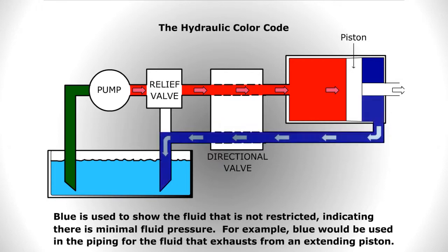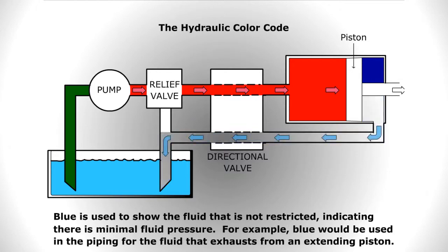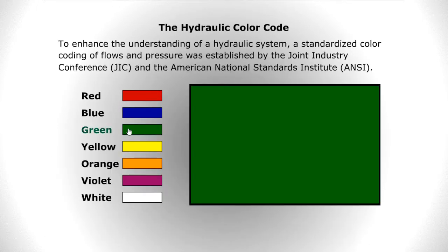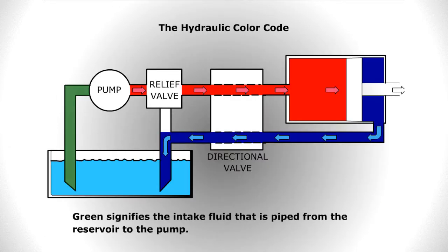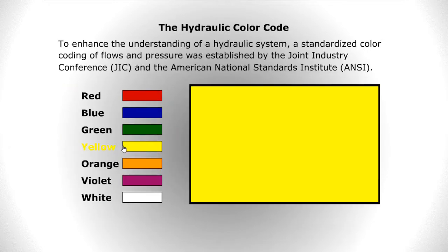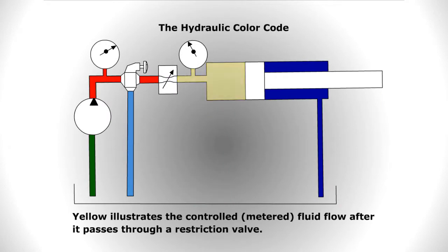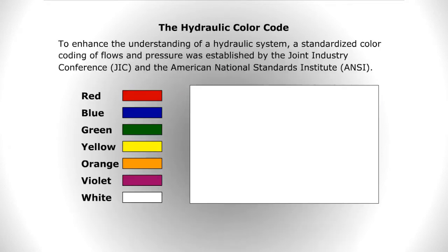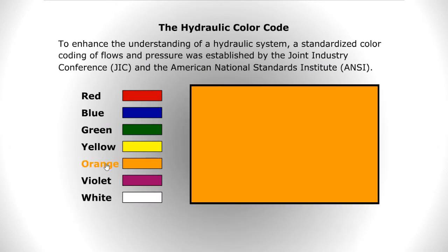For example, blue would be used in the piping for the fluid that exhausts from an extended piston. Green signifies the intake fluid that is piped from the reservoir to the pump. Yellow illustrates the controlled fluid flow after it passes through a restriction valve.